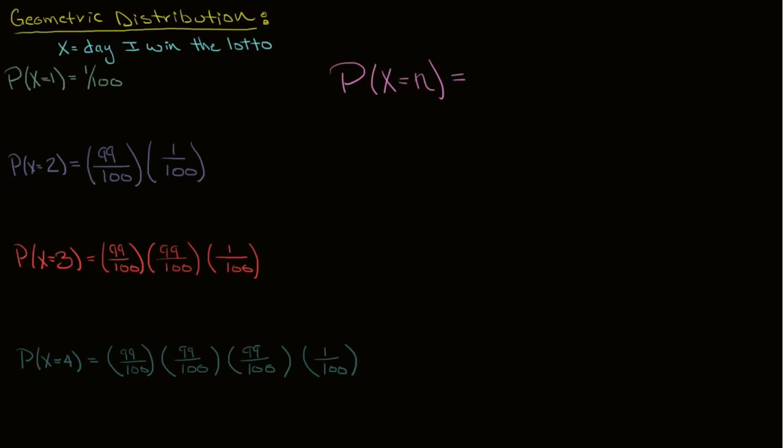I know that on the nth day I'm going to win the lotto, so I'm going to go ahead and put 1 over 100. And the only thing I have to really fill in is how many 99 over 100s do I have? I only have n days, and I know that on the nth day I won the lotto, so I must have lost the lotto n minus 1 times.